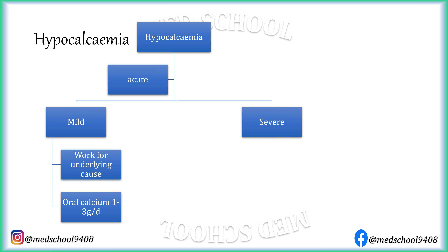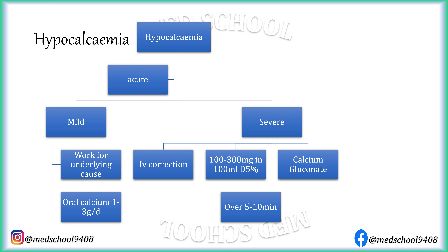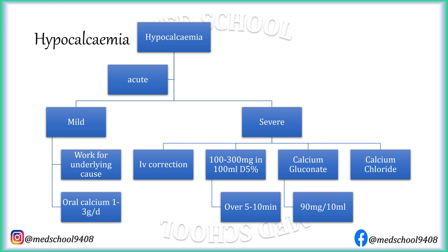In severe acute hypocalcemia, IV correction is required. Correction is given as 100 to 300 mg of elemental calcium in 100 ml of 5% dextrose over 5 to 10 minutes, which will increase ionic calcium by 0.5 to 1.5 millimole per liter. IV calcium is available as calcium gluconate, which contains 90 mg of elemental calcium per 10 ml, and calcium chloride, which contains 272 mg of elemental calcium per 10 ml.